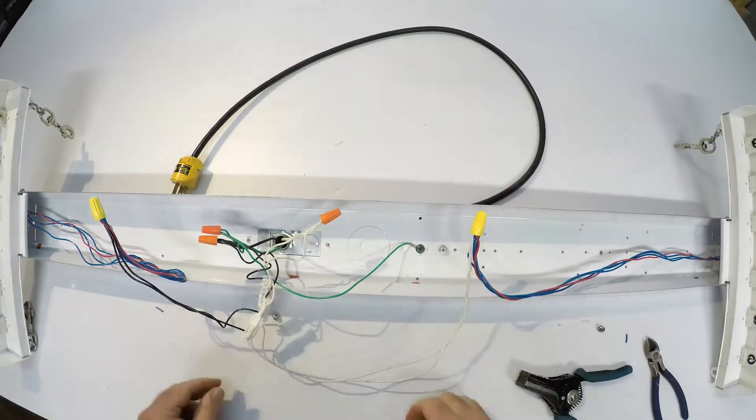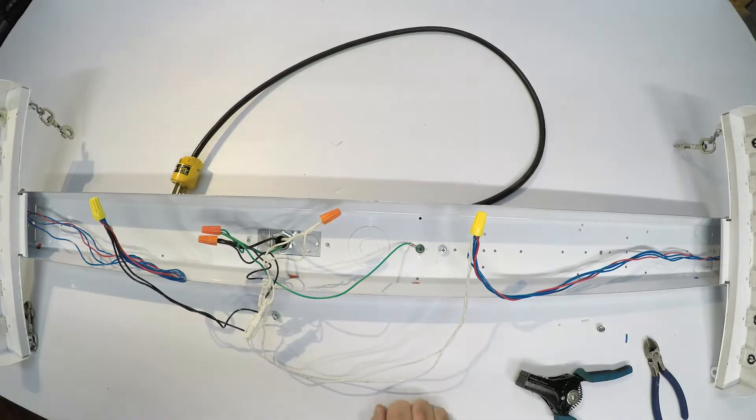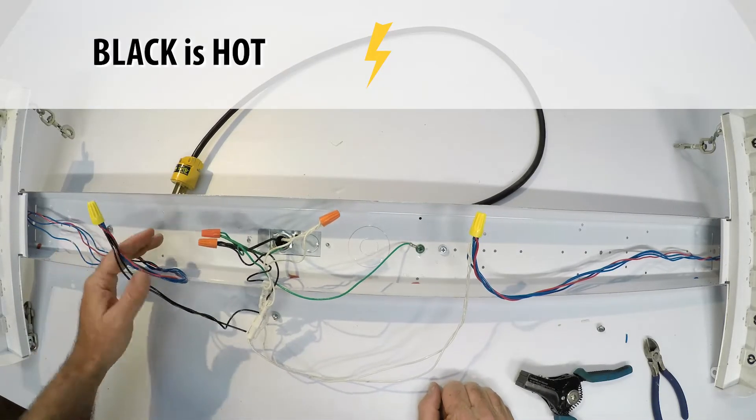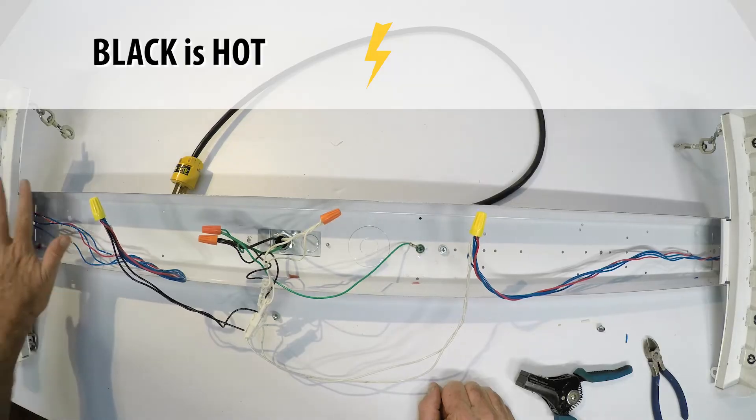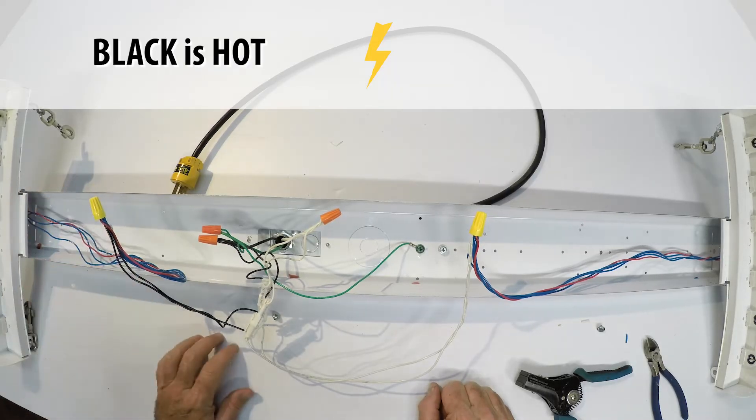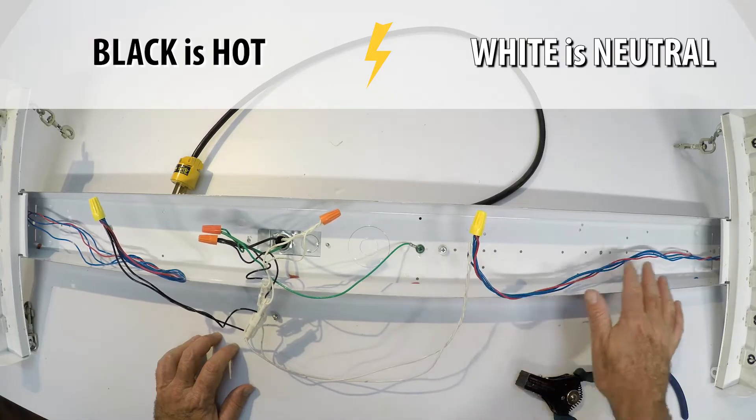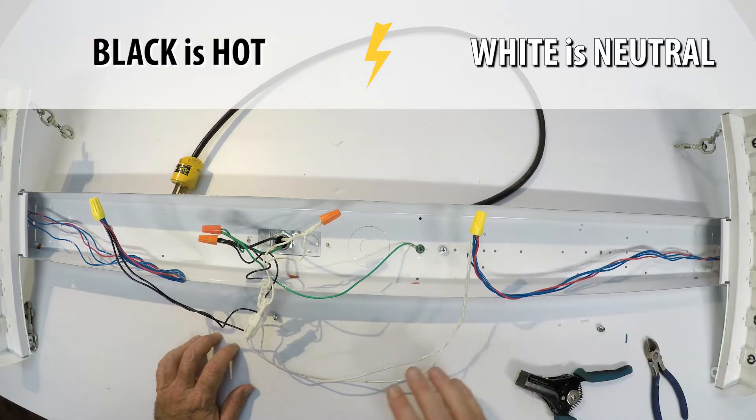So let's see what we have here. We've rewired the light fixture. We have the hot wires, the black, all connected to all the sockets on this end of the light fixture down here. And we have the neutral, the white wires connected to all the sockets on the other end of the fixture down here at this end.